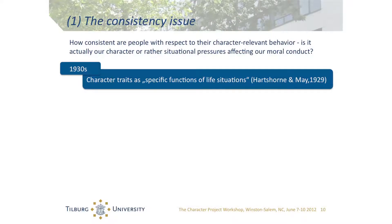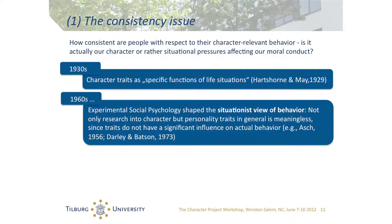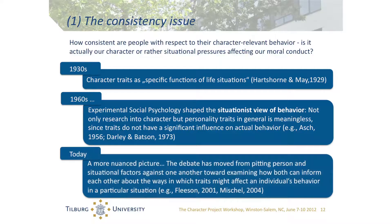Decades later, the consistency issue was brought up again, mainly through evidence from experimental social psychology that shaped the situationist view of behavior. According to this view, not only research into character but into personality traits in general is totally meaningless, because traits do not have a significant influence on actual behavior — it's all about the situation. Luckily, most psychologists today prefer a more nuanced picture, because the debate has moved from pitting personal and situational factors against one another toward examining how both can inform each other about the ways traits affect behavior in particular situations.